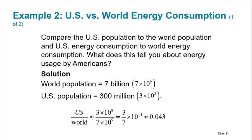So here's an example. Compare the U.S. population to the world population and U.S. energy consumption to the world energy consumption. What does this tell you about energy usage by Americans? Well, the world population is roughly 7 billion and the U.S. population is roughly 300 million. So the U.S. to the world: 300 million is 3×10^8. This is 7×10^9 which gives us 3/7 times 10^-1 because we have 8 of them up here and 9 of them down here. So 8 minus 9 is negative 1. So you do 3 sevenths and then you move the decimal place 1 over and it's 0.043. So we're basically 4.3% of the world's population.